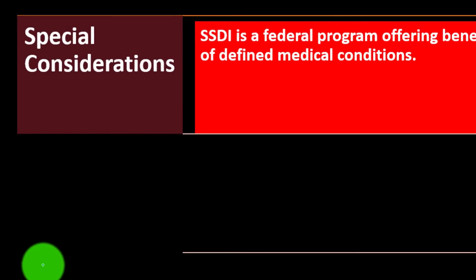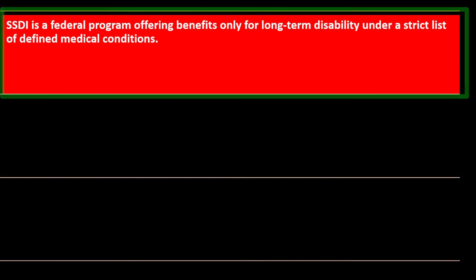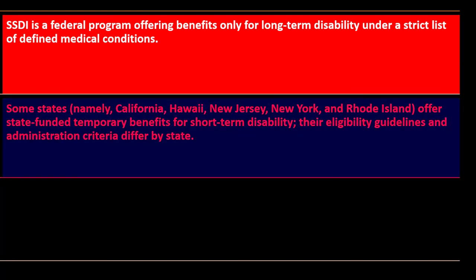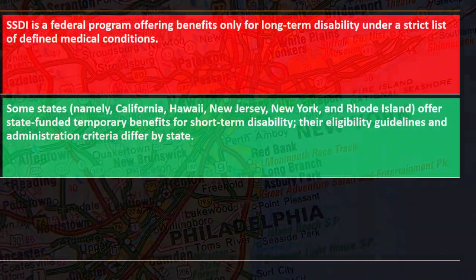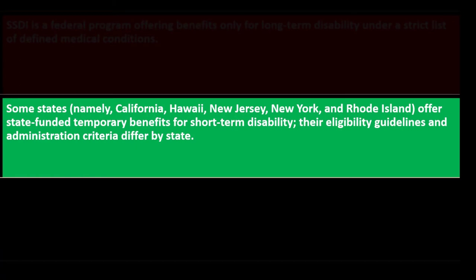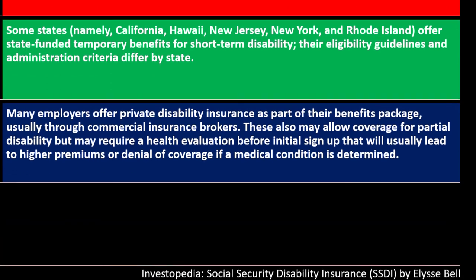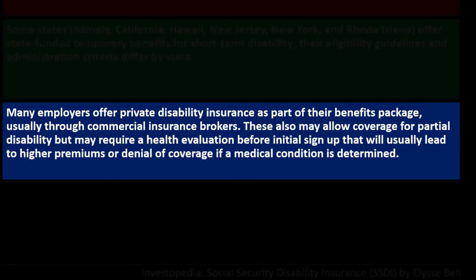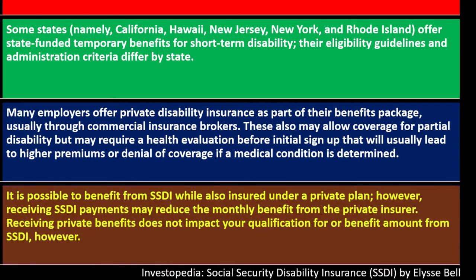SSDI is a federal program offering benefits only for long-term disability under a strict list of defined medical conditions. Some states — California, Hawaii, New Jersey, New York, and Rhode Island — offer state-funded temporary benefits for short-term disability, though eligibility guidelines differ by state. Many employers offer private disability insurance as part of a benefits package through commercial insurance brokers, which may also cover partial disability but may require a health evaluation before initial sign-up.